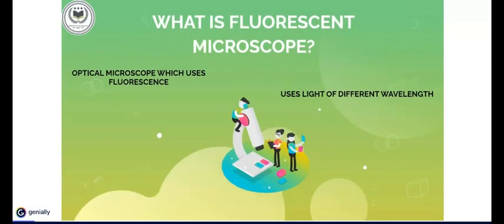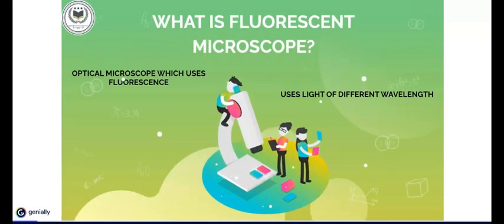What is fluorescent microscope? First, let us know what is fluorescence microscope. A fluorescence microscope is an optical microscope that studies the characteristics of organic or inorganic substances using fluorescence and phosphorescence instead of, or in addition to, reflection and absorption.